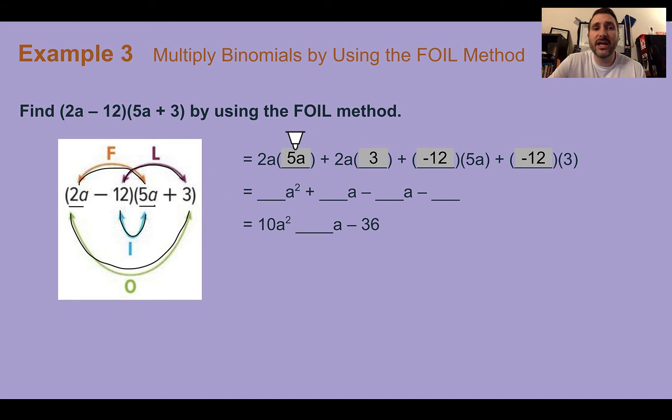Now, multiplying stuff together, 5 times 2 is 10. a times a is a squared. 2 times 3 is 6 with the a. Negative 12 and 5 is negative 60 with the a. And negative 12 times 3 is negative 36. Again, we still have to combine our outer and inner terms from the middle. So positive 6 minus 60 is negative 54a. So our final expression is 10a squared minus 54a minus 36. And again, we have another quadratic expression.